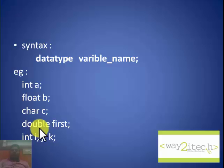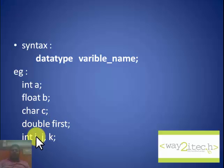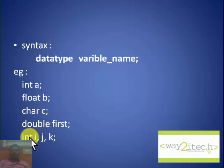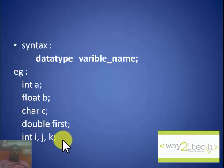Similarly, double first — double is the data type and first is the variable name. You can also declare multiple variables in a single line: int i, j, k. These are three variables all of int type declared in a single line.